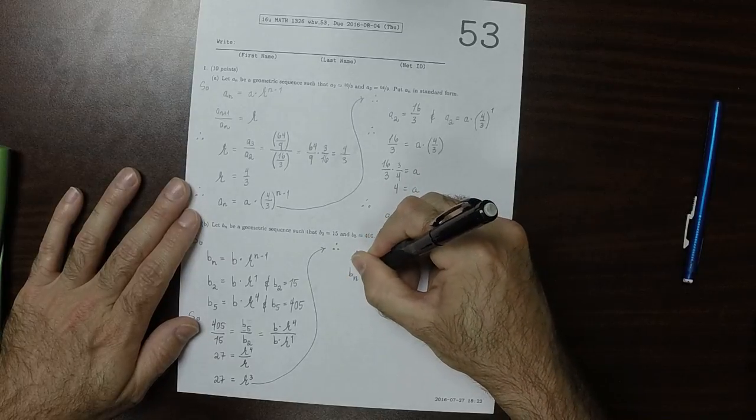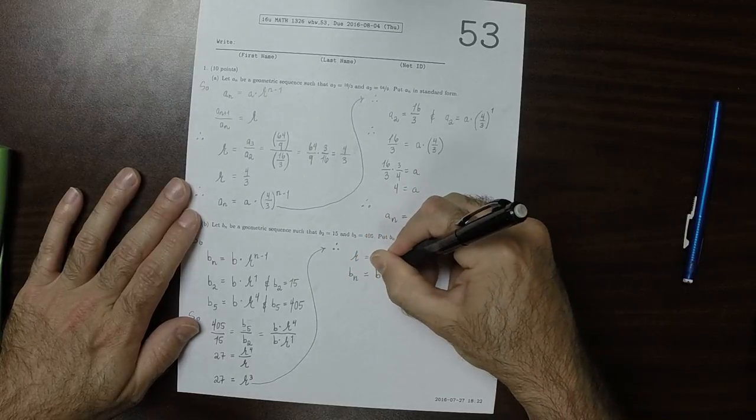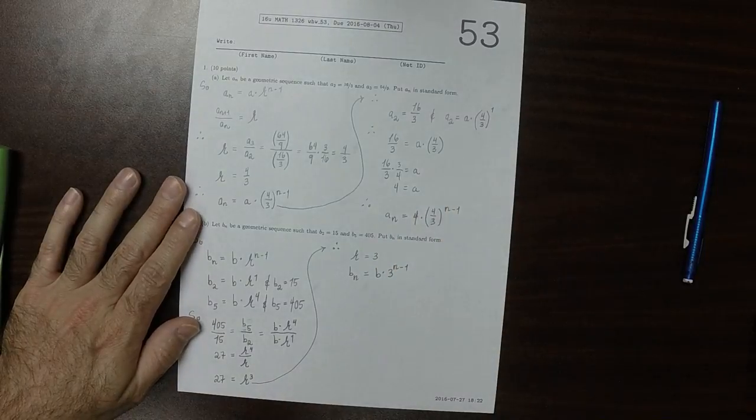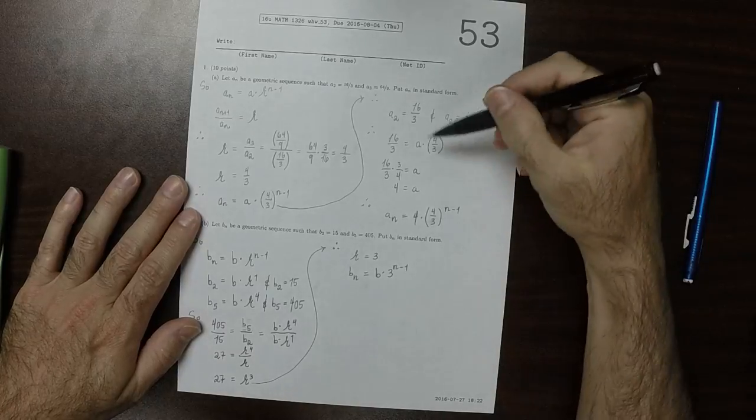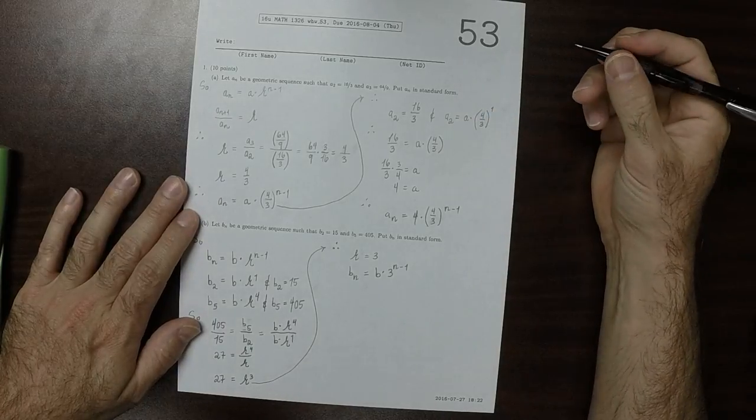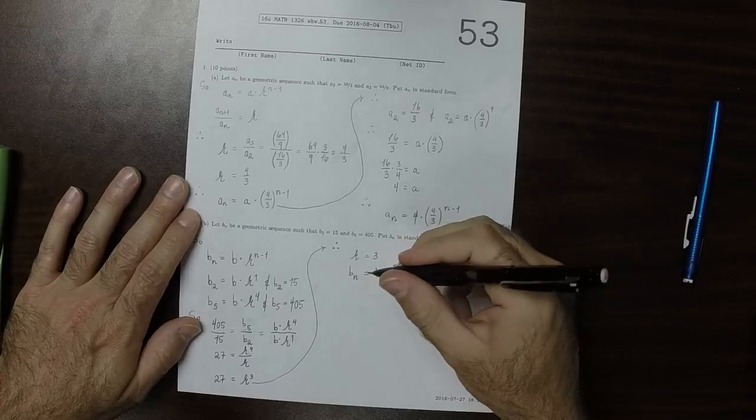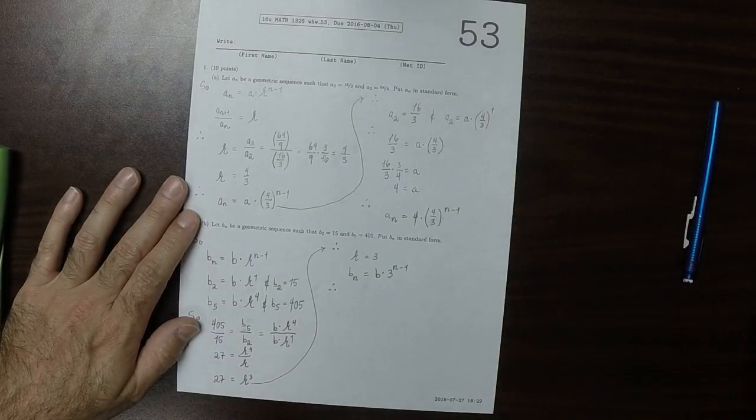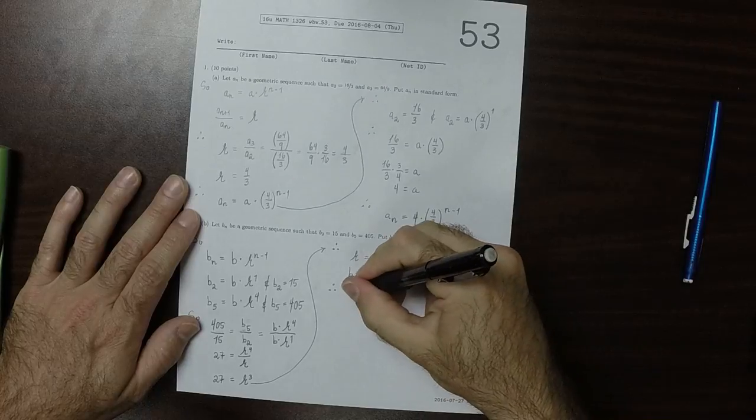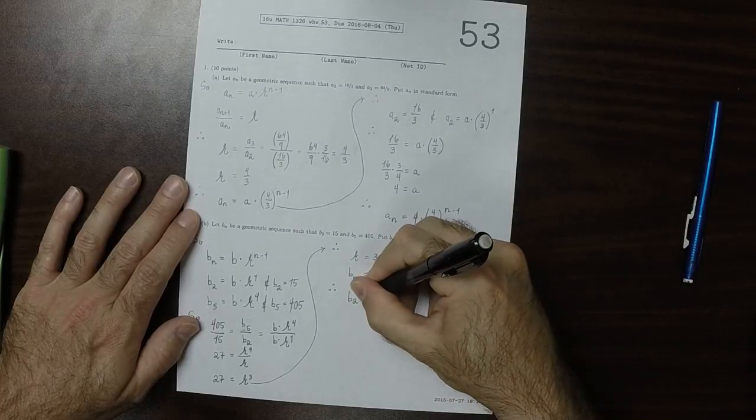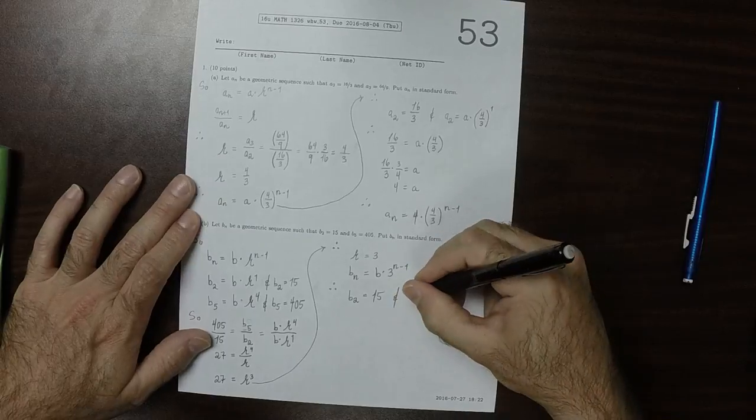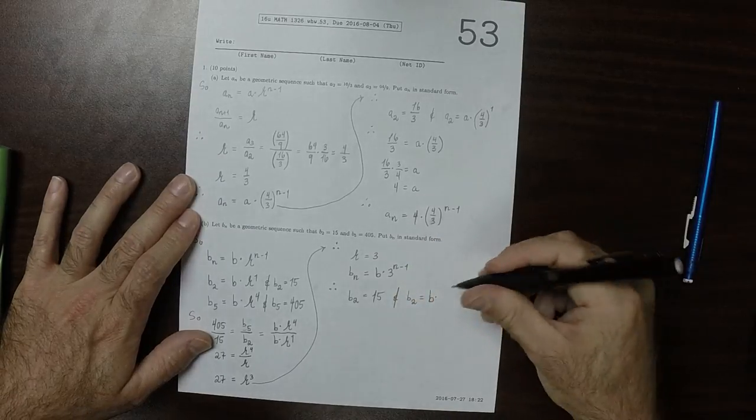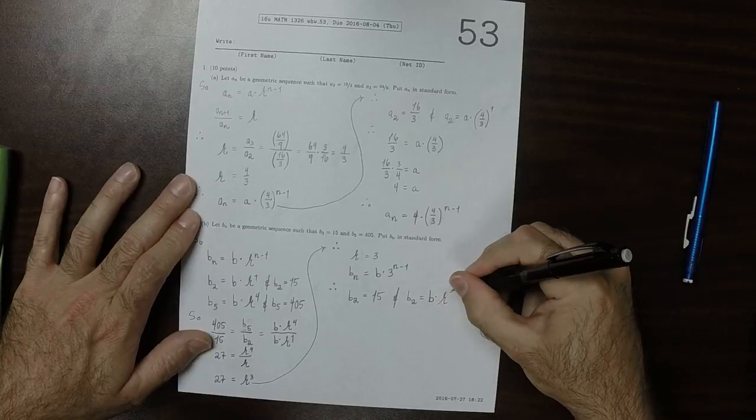And b_n is now some unknown b multiplied by 3 to n minus 1. And now it's just like the end of the previous exercise. So we could take either one of these pieces of data. I'll use the smaller one. So on the one hand, we know that b2 is 15. And on the other hand, we know that b2 is the unknown b multiplied by r to 1.